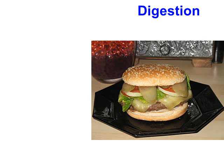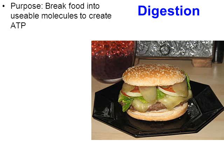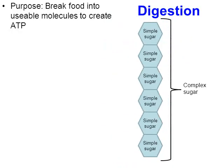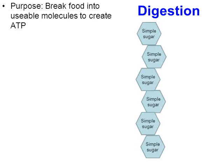When we look at the process of digestion, think about its purpose: it simply breaks the food we've eaten into usable molecules. Once food has been broken down into usable molecules, those molecules will hopefully help create ATP. Inside foods like a hamburger there are complex sugars. A complex sugar — called a polysaccharide — is made up from smaller simple sugars called monosaccharides.